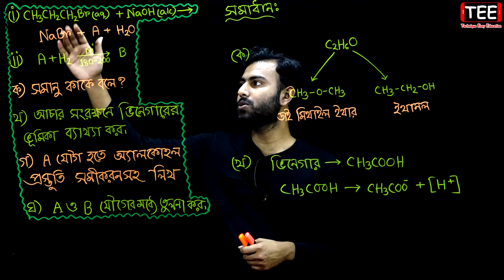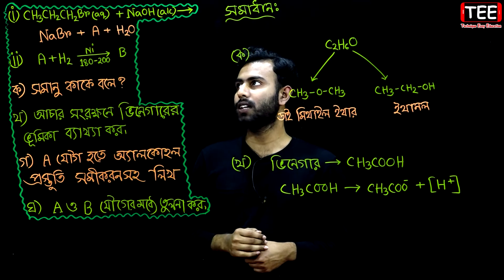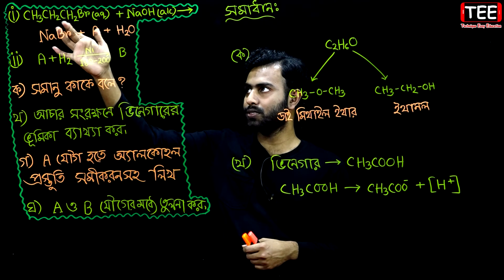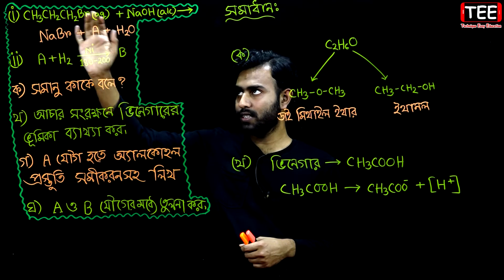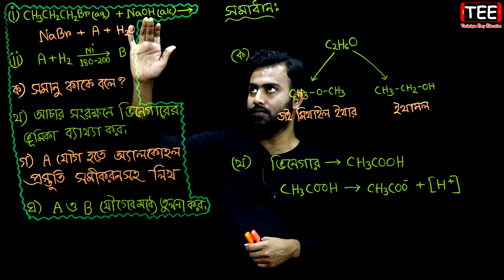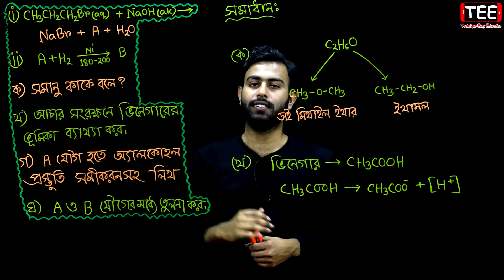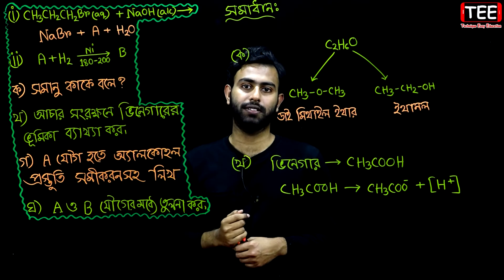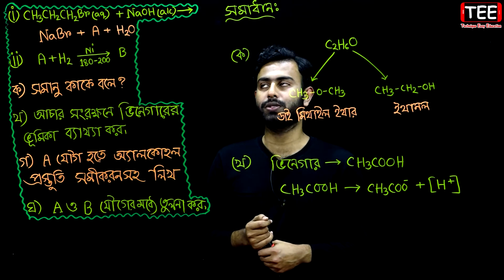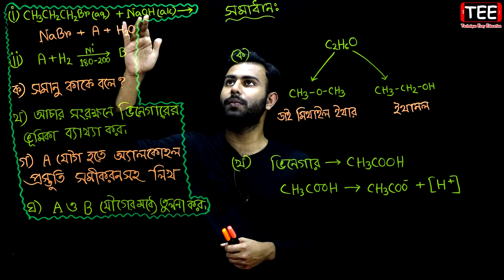We need to look at two things. We need to do propyl bromide: CH3CH2CH2Br. Propyl bromide with sodium hydroxide — the first condition is ALC (alcohol), and the reagent is sodium hydroxide. We need to use sodium hydroxide in alcohol.